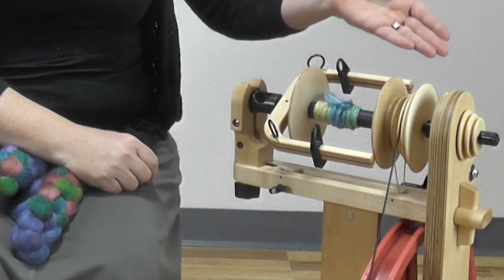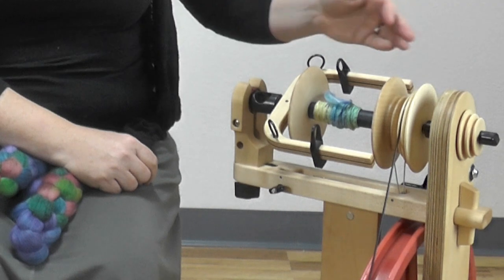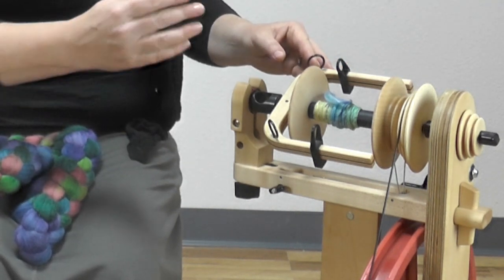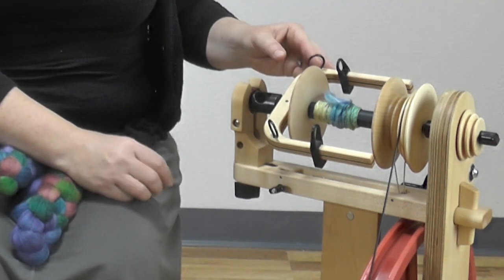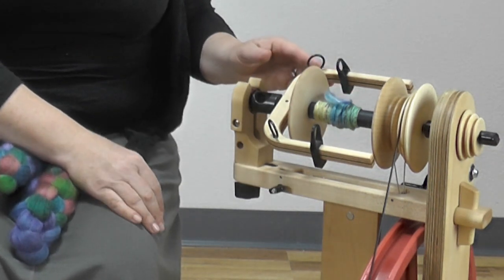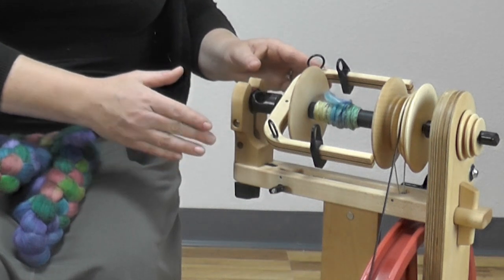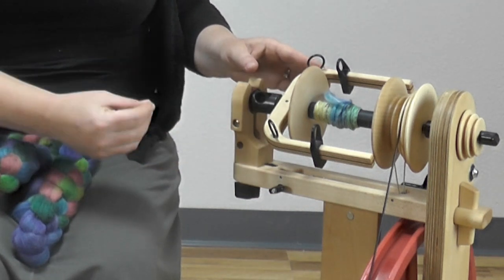I have it set up with a slow whorl and this is very nice for me because the ratio with the smaller drive wheel on my ladybug compared to my matchless slows down the flyer enough that I can introduce a very low twist which is required for a very bulky yarn.